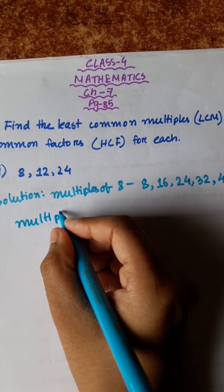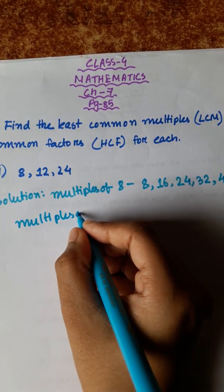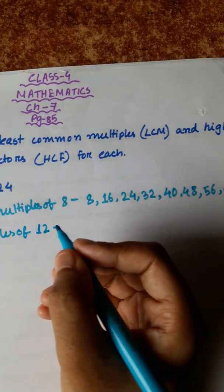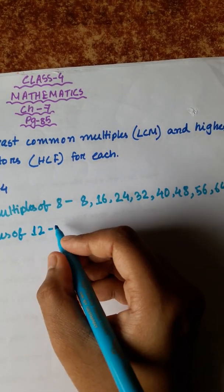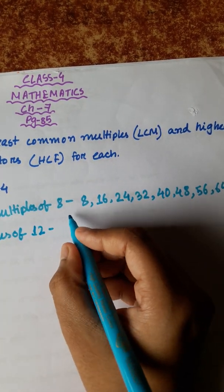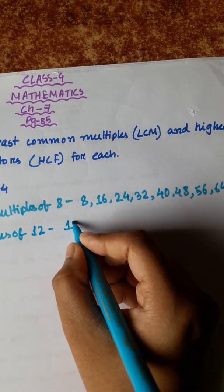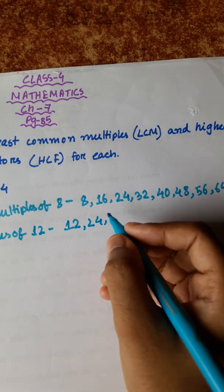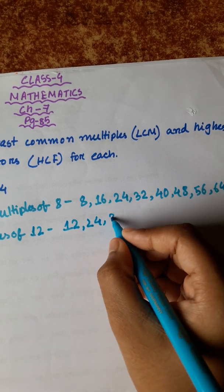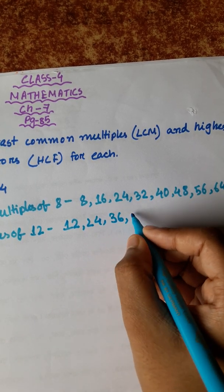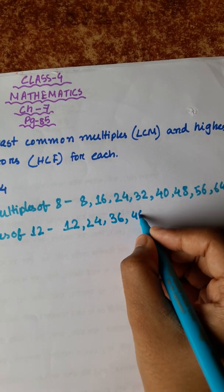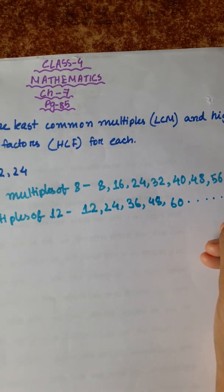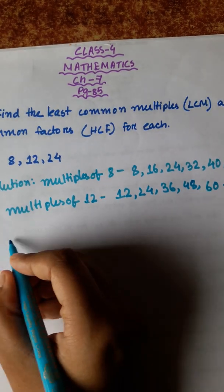Multiples of 12 are: 12, 24, 36, 48, 60, and so on.